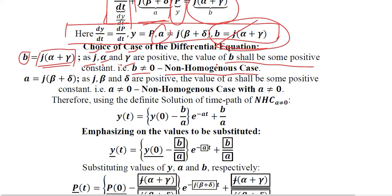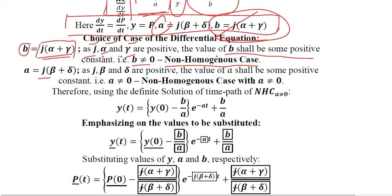The value of a is J times (beta plus delta). Again J is positive, beta is positive, and delta is positive. Adding and multiplying positive values gives a positive result not equal to zero. Therefore a is not equal to zero, meaning we have non-homogeneous case 1. The solution formula for this case is known; we simply substitute the values, which are underlined for ease.